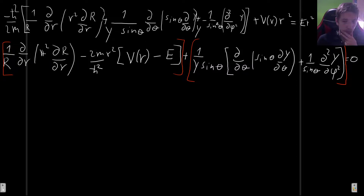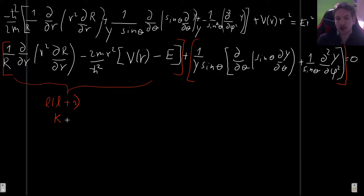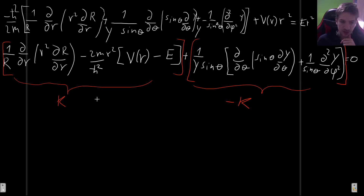We give this separation constant a name. In textbooks it's usually called l(l+1) because that form appears naturally later, but since we're solving this for the first time and don't know what will happen, I'll just call it k for now. We'll rename it l(l+1) later. So the radial part equals k, and the angular part must equal −k so that together they sum to zero.